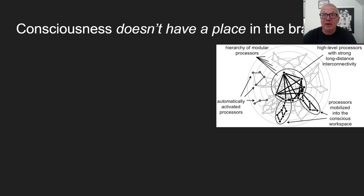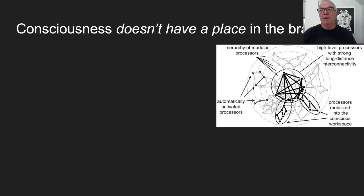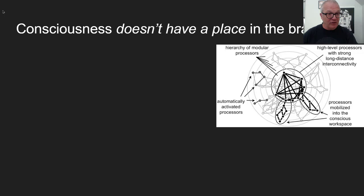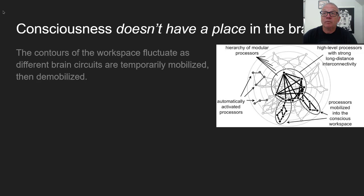Consciousness doesn't have a place or location in the brain as such. It's a dynamic coordinated activity surging back and forth across millions of neurons. There are neurons that play indispensable roles, but it's a bit like traffic jams: a traffic jam changes where it is. If you watch Google Maps, the red zones appear in different regions at different times — it's not about the highway itself, it's about the activity levels in those regions.